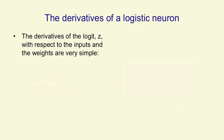So to get the derivatives of a logistic neuron with respect to the weights, which is what we need for learning, we first need to compute the derivative of the logit itself, that is the total input, with respect to a weight. That's very simple. The logit is just a bias plus the sum over all the input lines of the value on the input line times the weight.